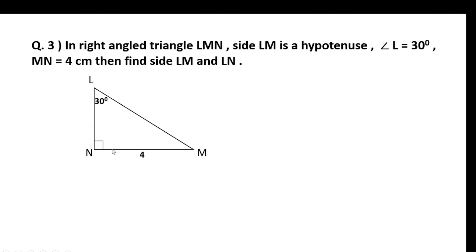Now find LN. LN is opposite the 60-degree angle. Using the 60-degree formula: LM equals root 3 upon 2 into hypotenuse. That gives root 3 upon 2 into 8, which equals 4 root 3. Use the 30-60-90 formulas to complete the solution.